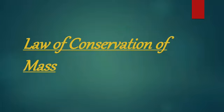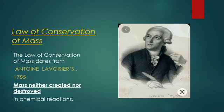Assalamu alaikum students. Today we are going to learn about the law of conservation of mass. The law of conservation of mass was given by a French chemist whose name is Anton Lavoisier in 1785 — in some books it is shown as 1789. Law means rule or canon, conservation means to conserve, and mass means anything which occupies space and has some volume.